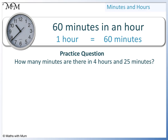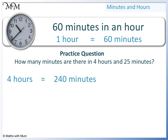Here is the first practice question for this lesson. How many minutes are there in 4 hours and 25 minutes? Pause the video and have a go. If 1 hour is 60 minutes, then 4 hours is 4 lots of 60 minutes, which is 240 minutes. We also have an extra 25 minutes. Altogether, there are 265 minutes.